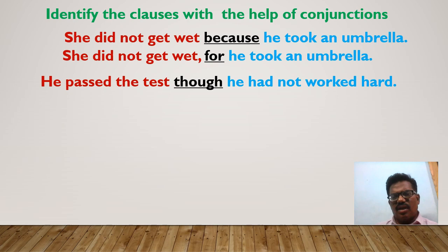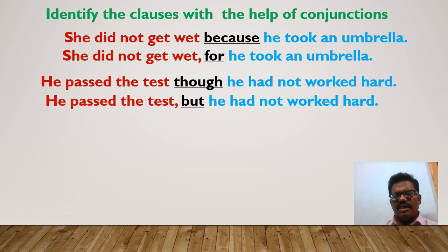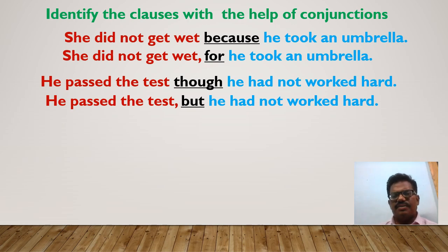In this sentence, the clause 'he had not worked hard' is called a subordinate clause because it has the subordinating conjunction 'though' before it. In the next sentence, the same clause 'he had not worked hard' is called a main clause because it has the coordinating conjunction 'but' before it.